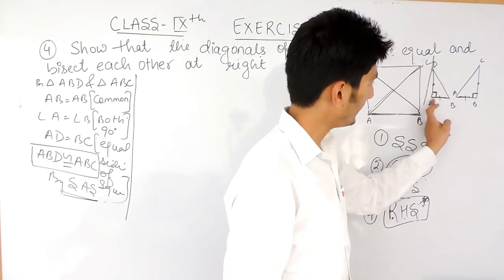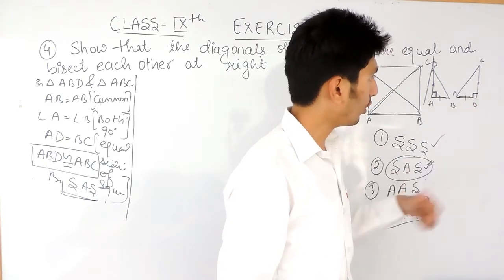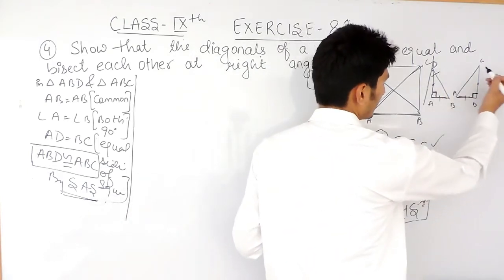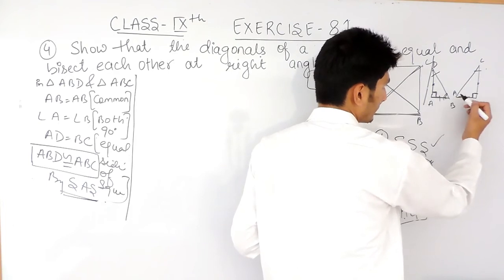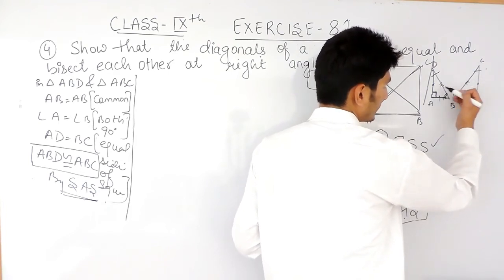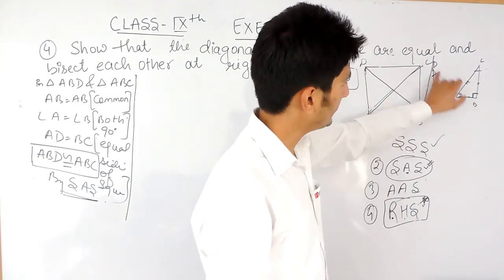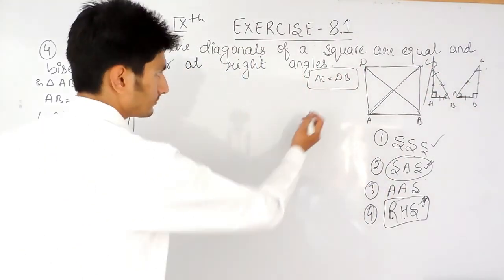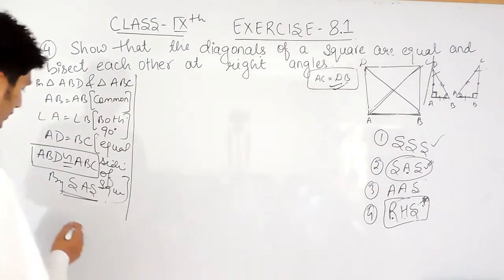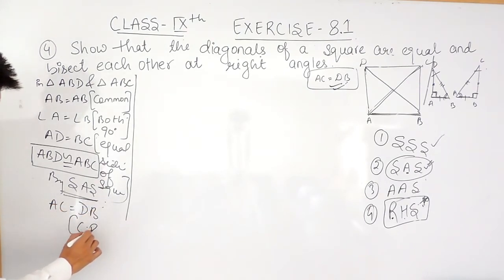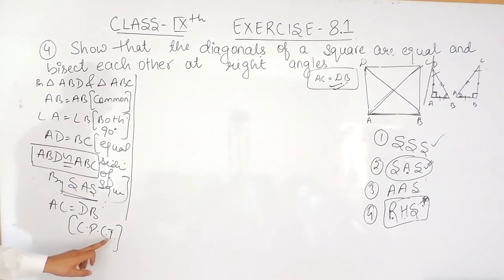If these two triangles are congruent, then by CPCT the remaining three parts must also be equal. So DB will be equal to AC — which is exactly what we had to prove. Therefore, by CPCT, AC equals DB. CPCT stands for 'corresponding parts of congruent triangles.' That completes the first part.